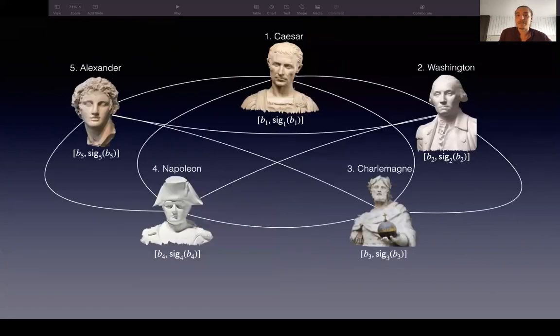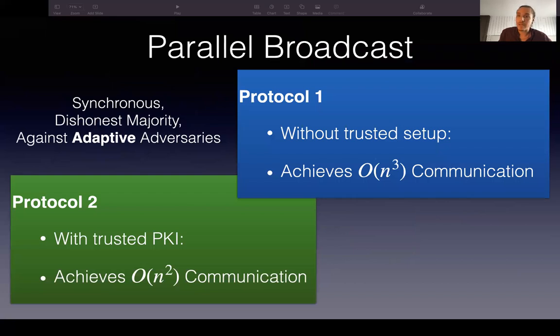This additional observation is that in many MPC settings, instead of single-sender broadcast, what we actually want is parallel broadcast, as we explained earlier, where every party wants to send their own messages. And what we do in our next results is that we show how to, in the synchronous parallel broadcast setting against dishonest adversaries and against adaptive adversaries who achieve dishonest majority, how to achieve protocols with improved communication in terms of the state of the art, both with and without trusted setup.